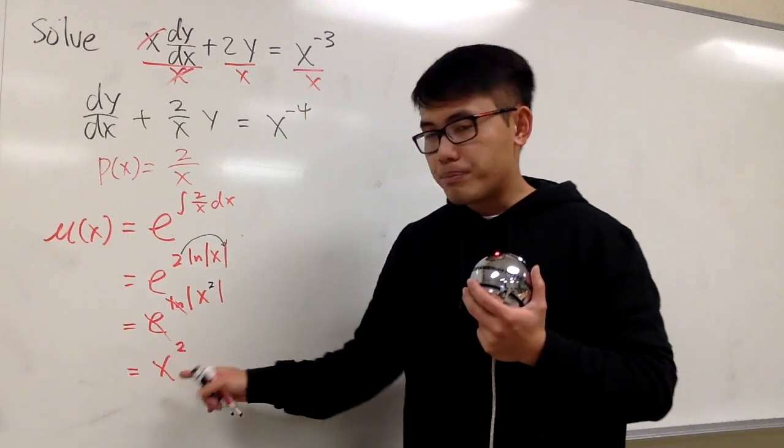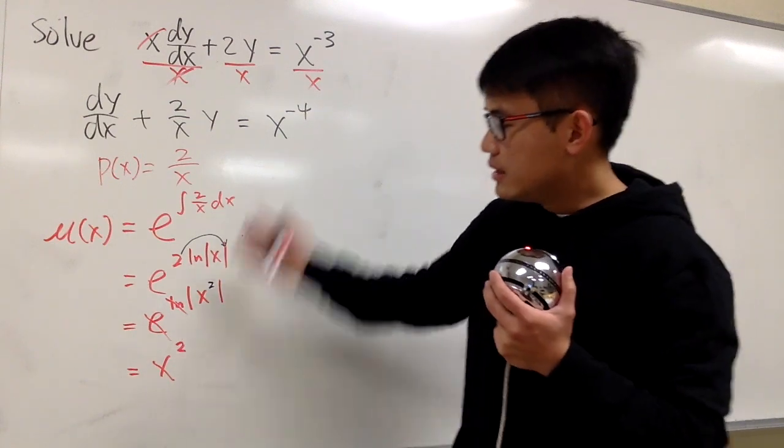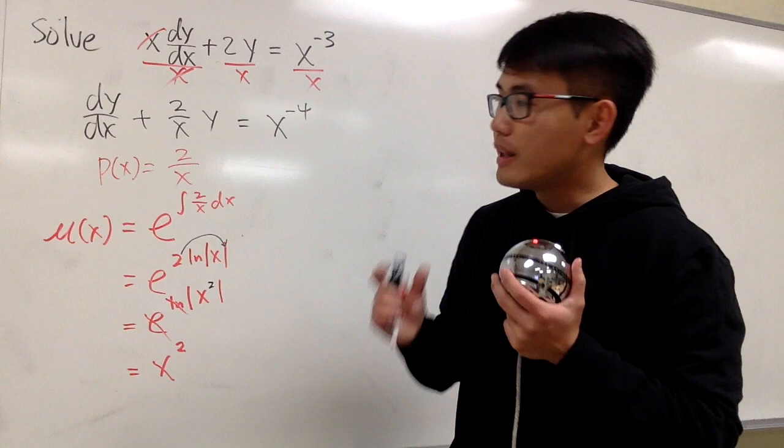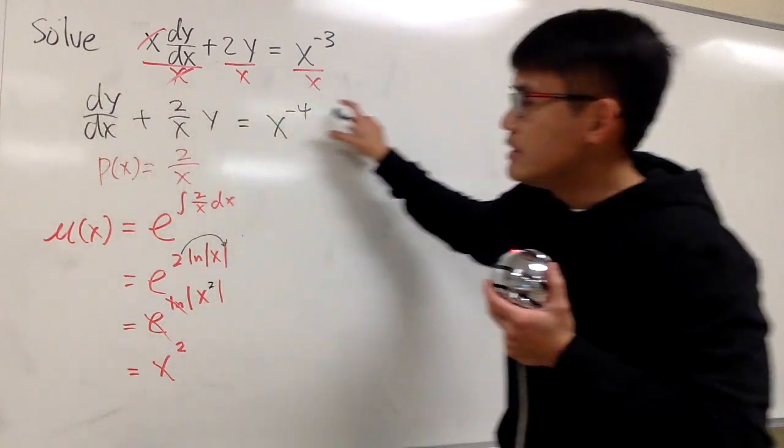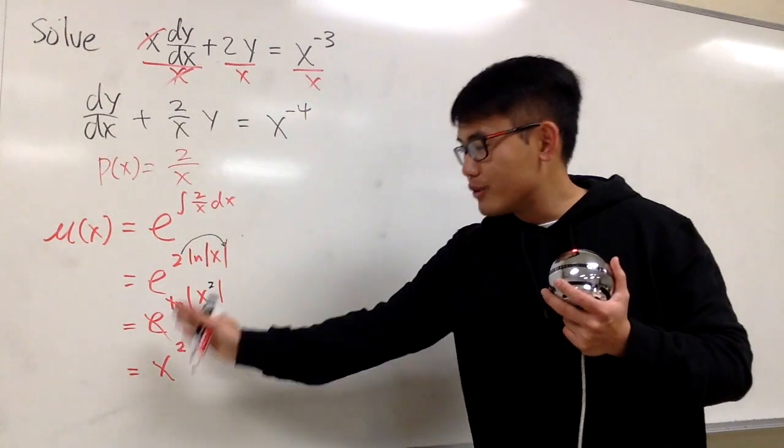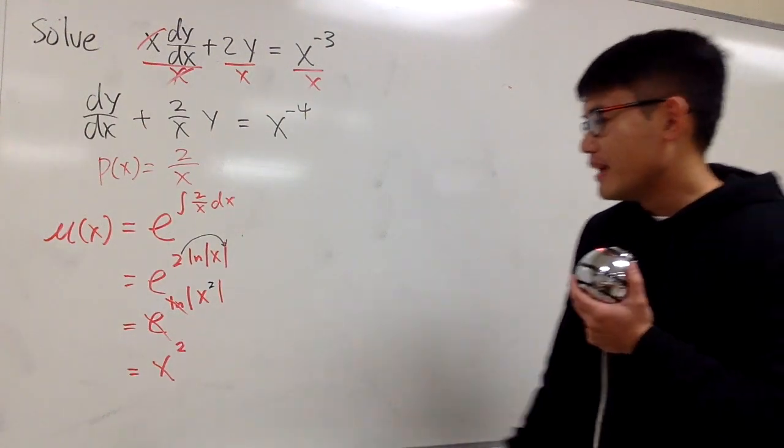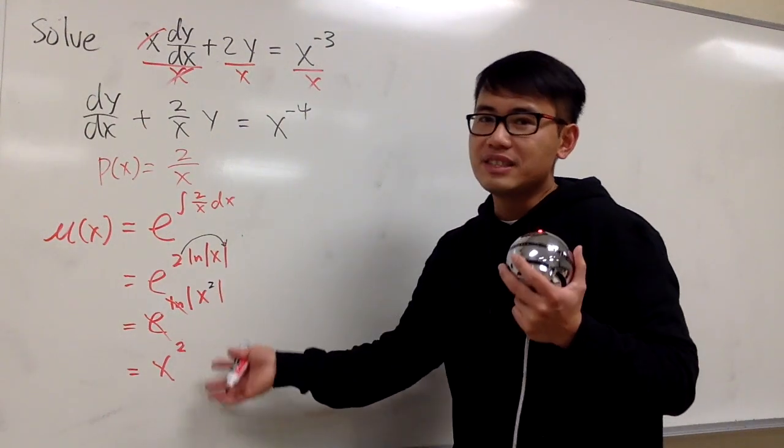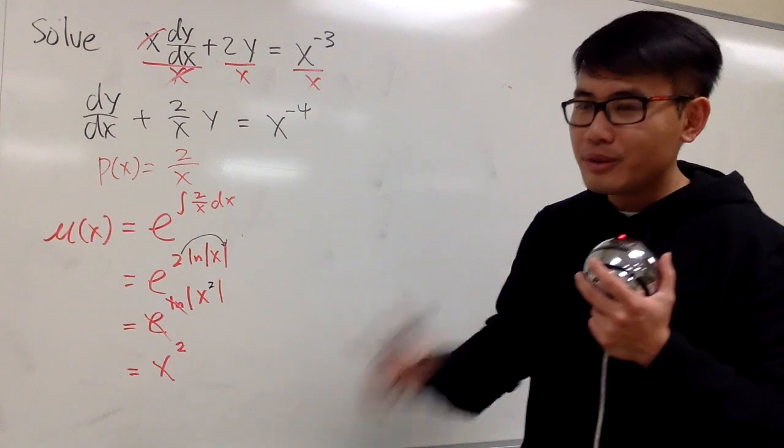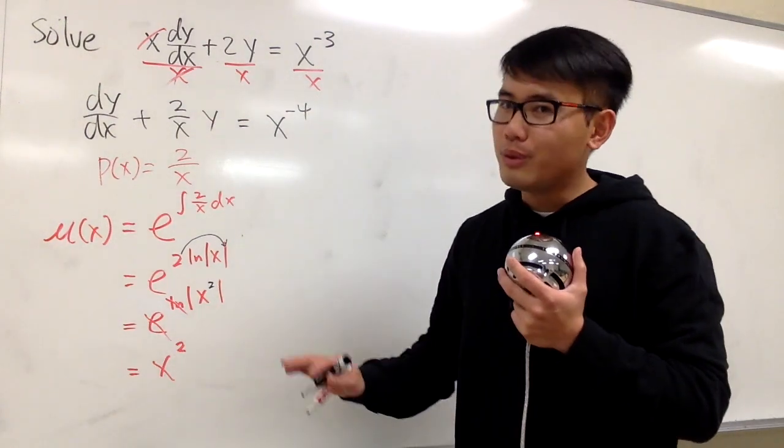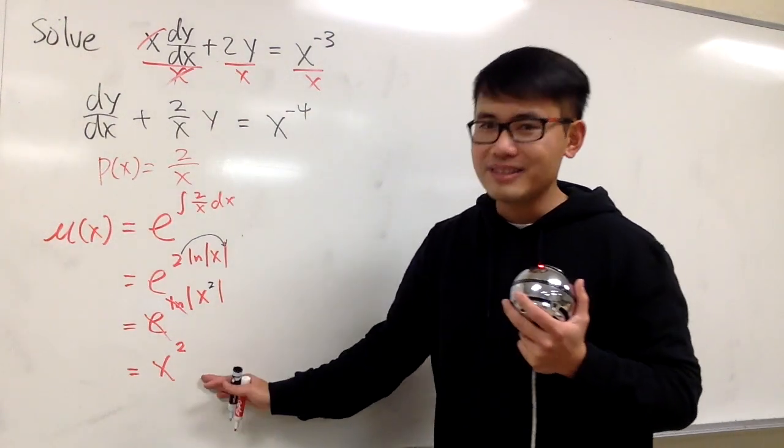Well, you don't need the absolute value, because this is just going to be a function that we need. And we'll multiply everything by that function. Don't worry about the absolute value. It's not because x squared is always positive and things like that. It's just, seriously, you don't need the absolute value, and you don't need any constant right here.